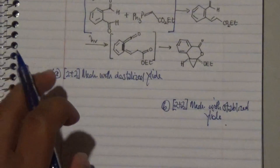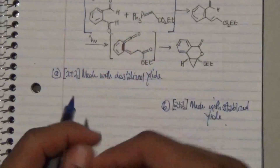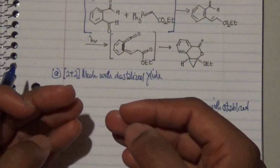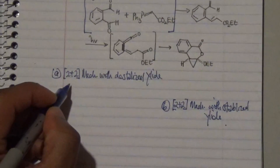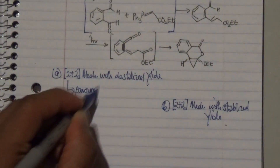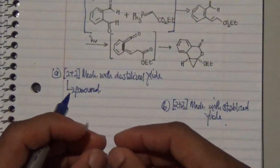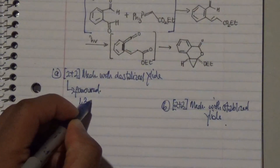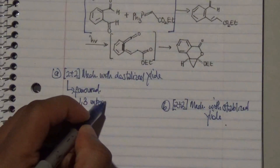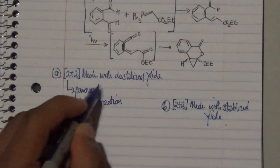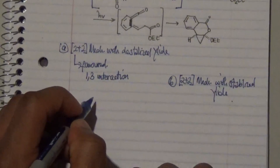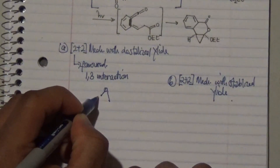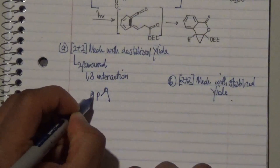Let's look at mechanism A. Mechanism A will generate either a favored or a disfavored intermediate. The favored intermediate will not allow the formation of a 1,3-interaction, and preventing this 1,3-interaction enables the favoring of the destabilized ylide. This leads to the formation of a particular intermediate where our P is PPh3.